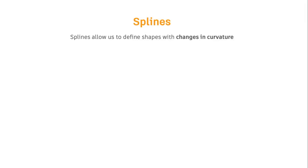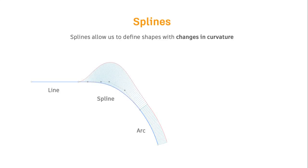So what are splines and why are they important in industrial design? Splines are unique in that they allow us to describe changes in curvature. If you think of basic sketching tools like lines and arcs, they have a fixed curvature — a line is zero curvature, and an arc has a constant curvature. Splines let us describe transitions between those curve types, so if you're building smooth shapes, you need splines to build nice smooth transitions between objects.